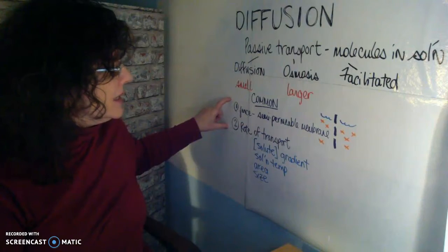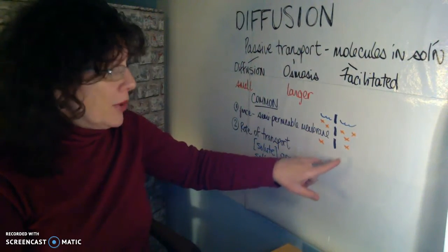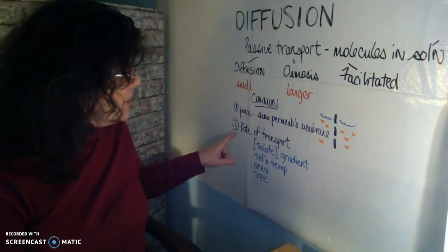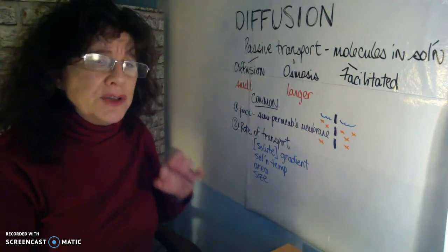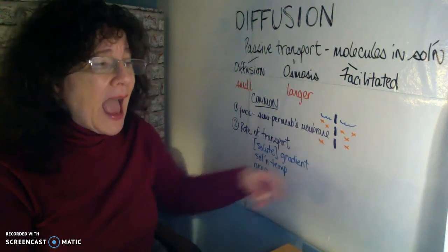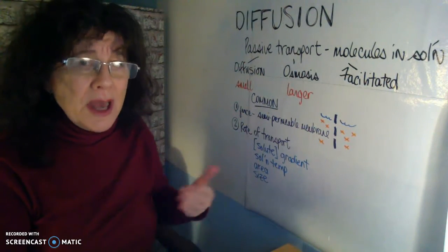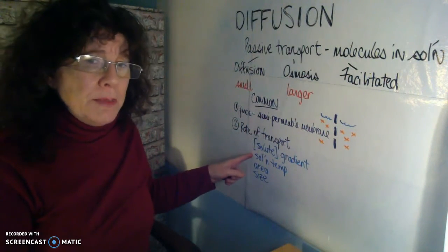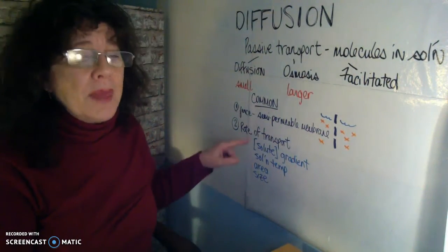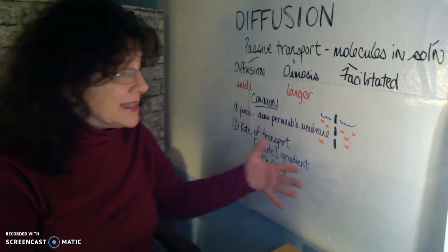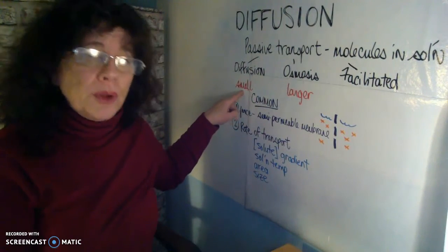To summarize the commonalities: all diffusion processes involve a semi-permeable membrane with two different solutions, one on each side. The rate of transport depends on the solute concentration gradient — a steeper difference means faster transport. Higher solution temperature increases kinetic energy and accelerates movement. Greater membrane surface area provides more access for transport. And smaller molecule size results in faster diffusion.